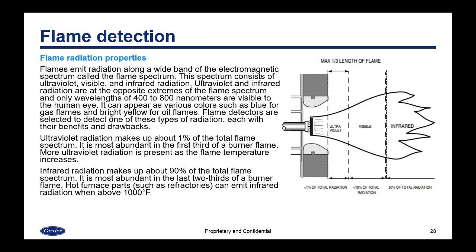Flames emit radiation along a wide band of electromagnetic spectrum called the flame spectrum. This spectrum consists of ultraviolet, visible, and infrared radiation. Ultraviolet and infrared radiation are at the opposite extremes of the flame spectrum, and only wavelengths of 400 to 800 nanometers are visible to the human eye. It can appear as various colors, such as blue for gas flames or bright yellow for oil flames.